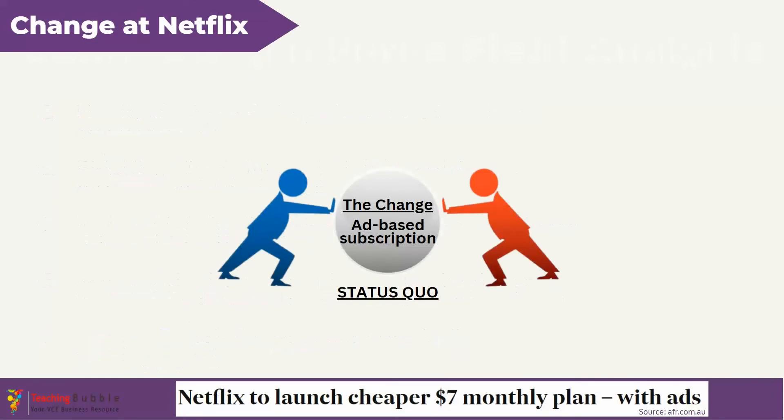Let's look at an example to see this in action. Consider a recent change implemented by Netflix — the launch of their more affordable subscription plan which features advertisements. Before any change was implemented, the business is in status quo, meaning it's remaining in its current state. By conducting a force field analysis, the business wants to disrupt that status quo and have driving forces that outweigh restraining forces, pushing it towards its new desired state.